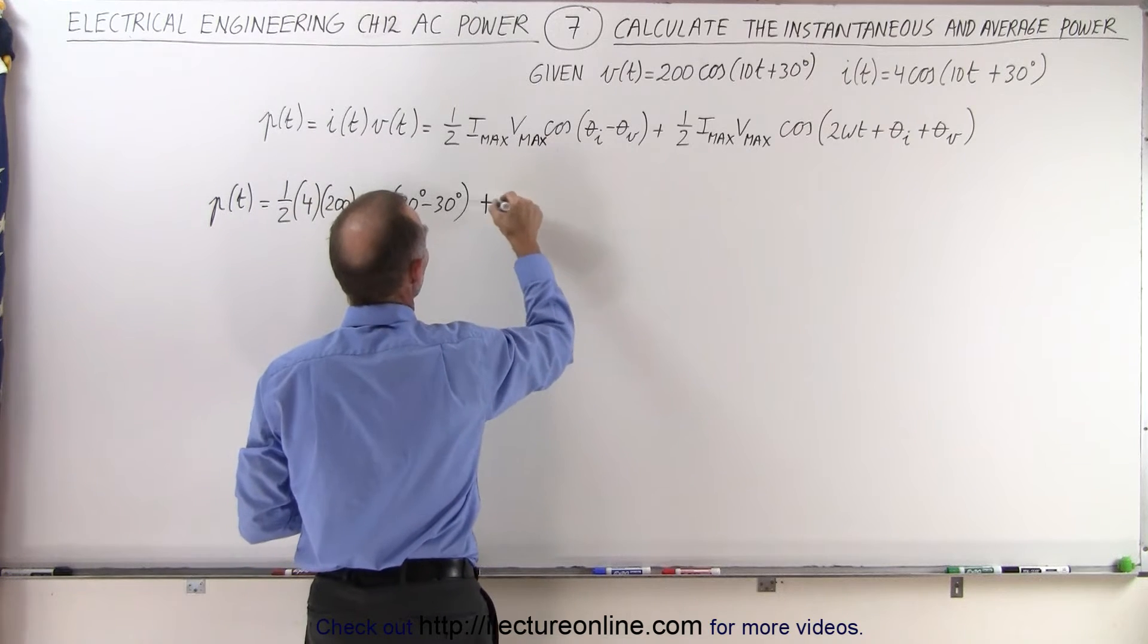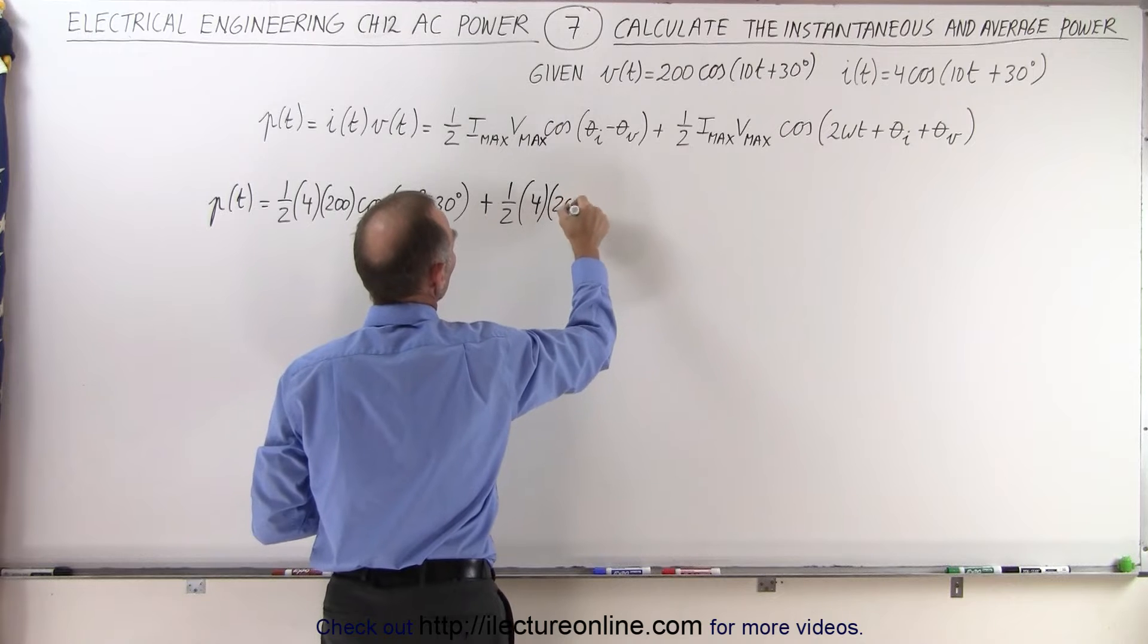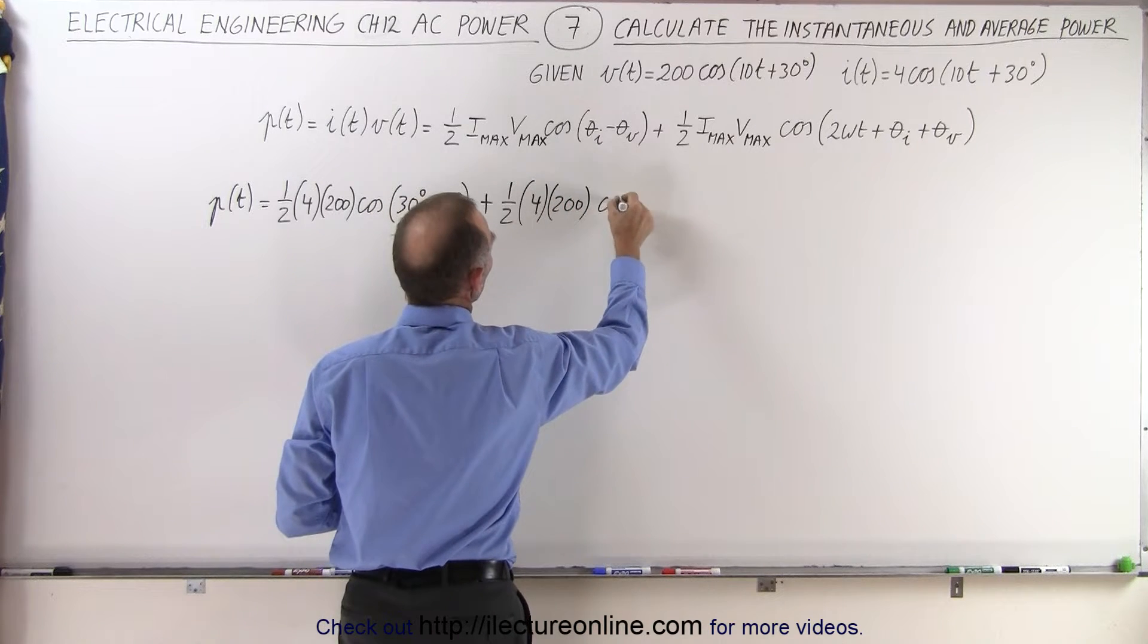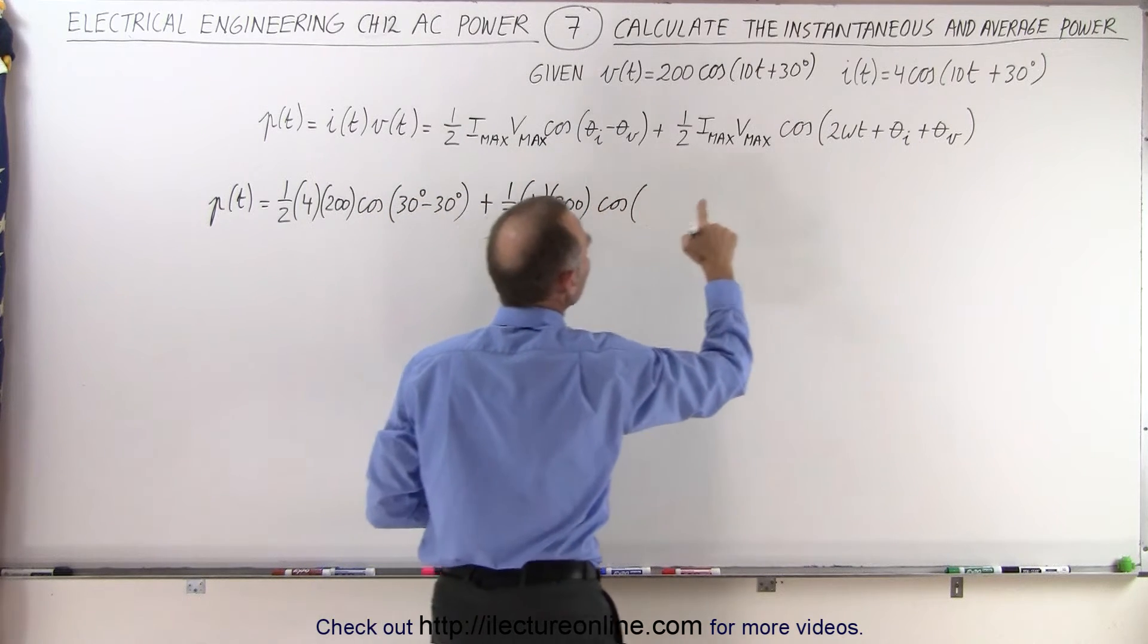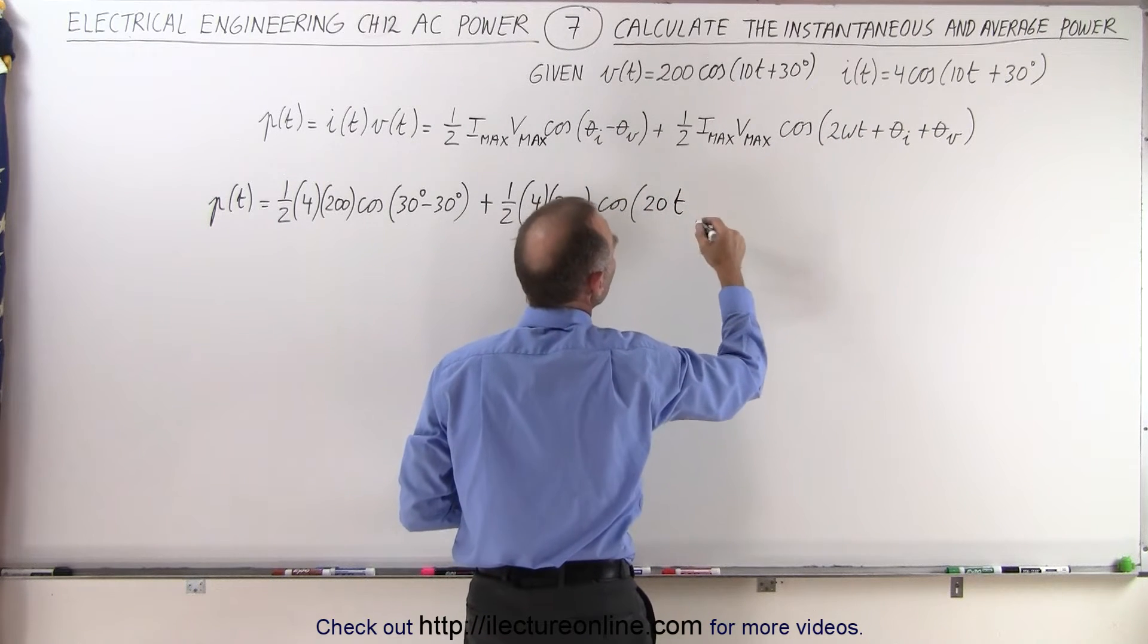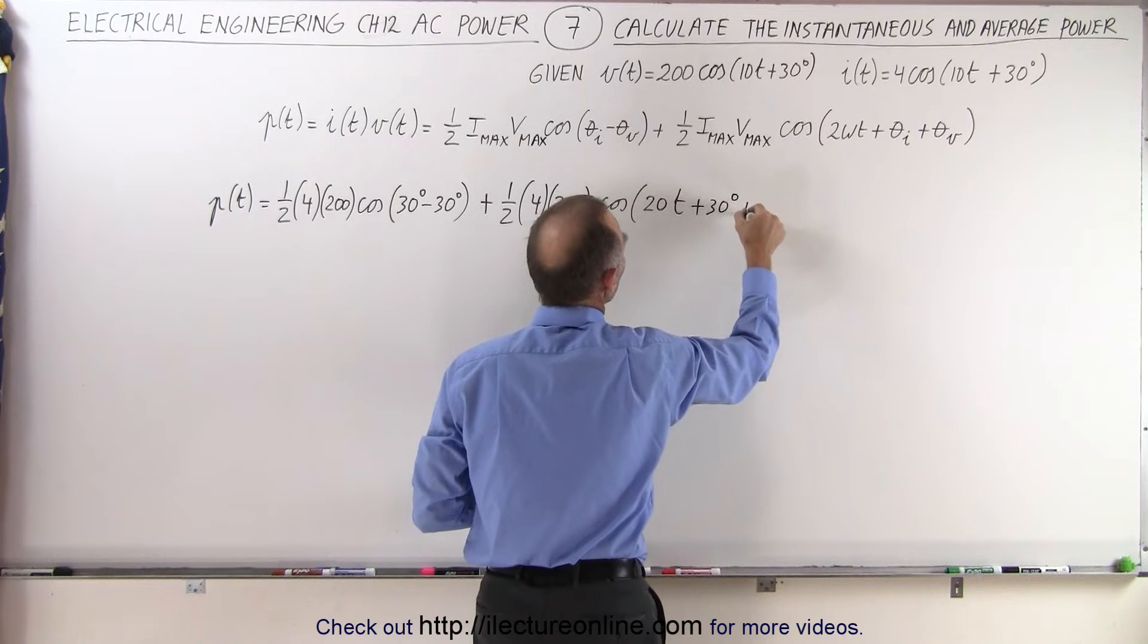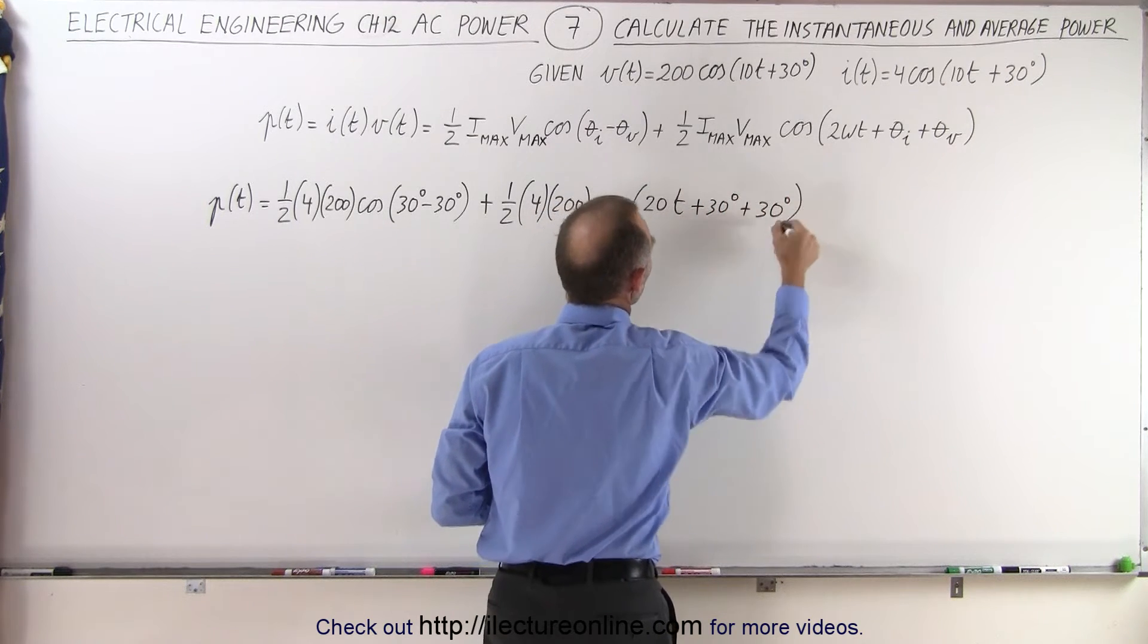So we have 30 degrees minus 30 degrees, which ends up being the cosine of zero. And then we have plus one half times Imax, which is 4, Vmax, which is 200, times the cosine of twice omega t. Now omega is 10, so twice that would be 20 times t, and then plus the sum of the two phase angles. That's 30 degrees plus another 30 degrees.